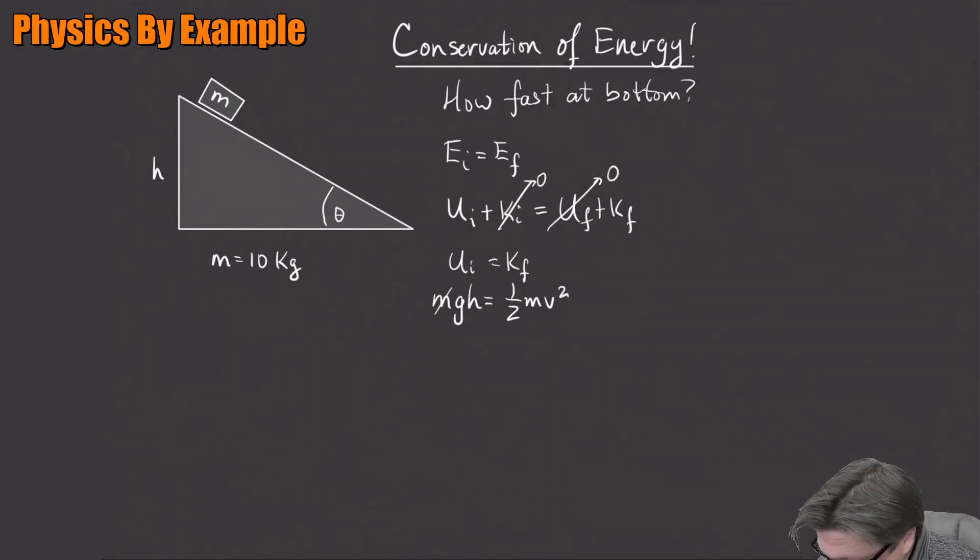So that means mgh is just equal to one half mv squared. Nice! As you would expect, the mass doesn't matter - that cancels out. So this means the speed at the bottom is just equal to square root of 2gh. That's a result you're going to see over and over again. That end result is worth just putting in your head - if something is falling, its speed after it falls a height h is just root 2gh. That's probably worth memorizing.